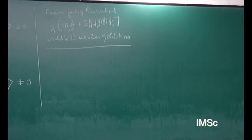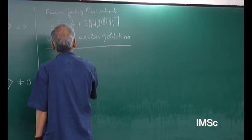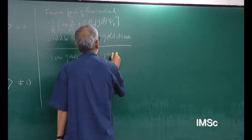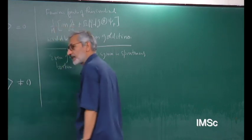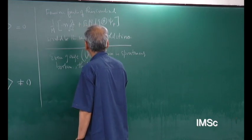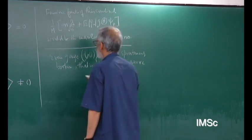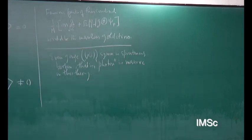Now let us look at the rest of the mass spectrum of this theory. We will discover that SUSY is broken because auxiliary fields pick up non-zero vacuum expectation values. But we will also discover that gauge symmetry is broken — the U(1) gauge symmetry is spontaneously broken, meaning the photon or gauge field is massive in this theory.